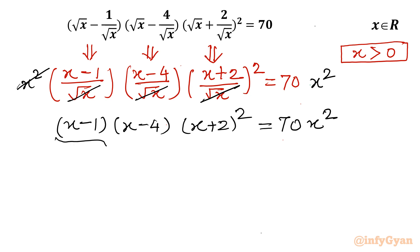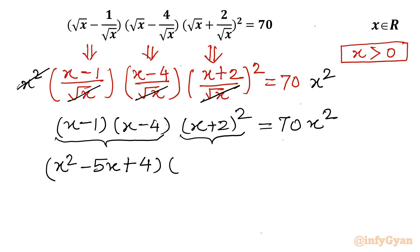Now I'll take the product of the first two brackets and expand the third using the identity (a + b)². Multiplying (x minus 1)(x minus 4): x times x gives x², x times minus 4 gives minus 4x, minus 1 times x gives minus x, so minus 5x combined, and minus 1 times minus 4 gives plus 4. The third bracket (x + 2)² expands as x² + 4x + 4. The right-hand side remains 70x².